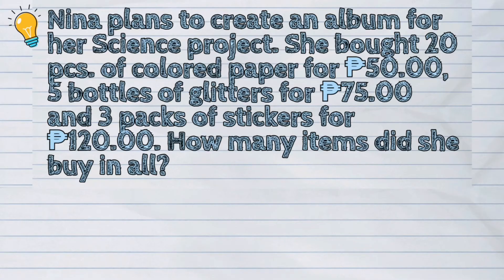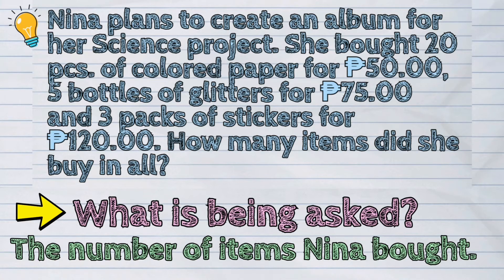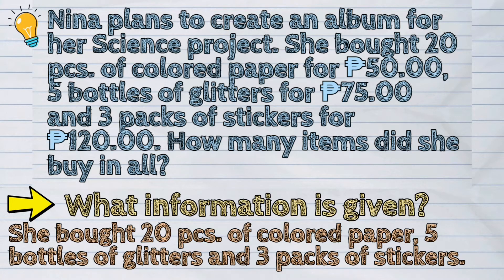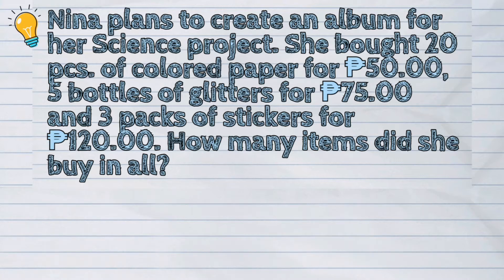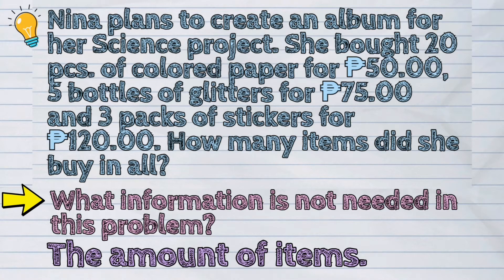So, in the given problem, what is being asked? It's the number of items Nina bought. What information is given? She bought 20 pieces of colored paper, 5 bottles of glitters, and 3 packs of stickers. What information is not needed in this problem? The amount of the items.